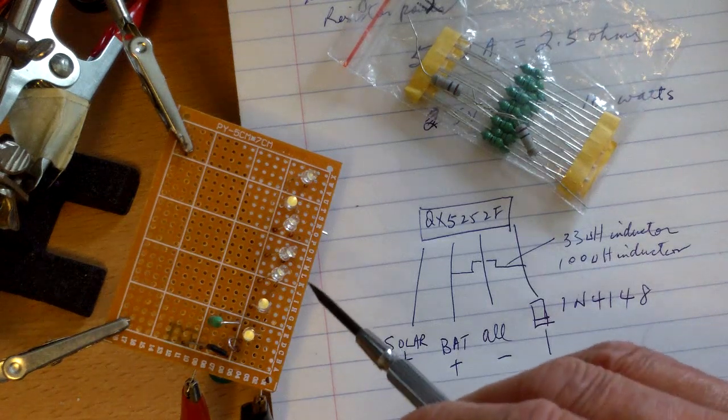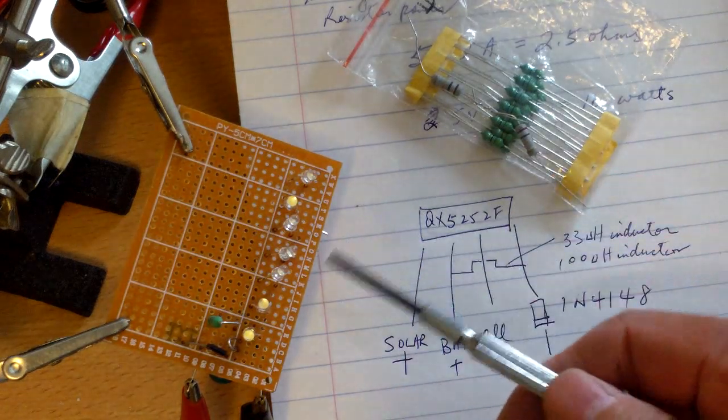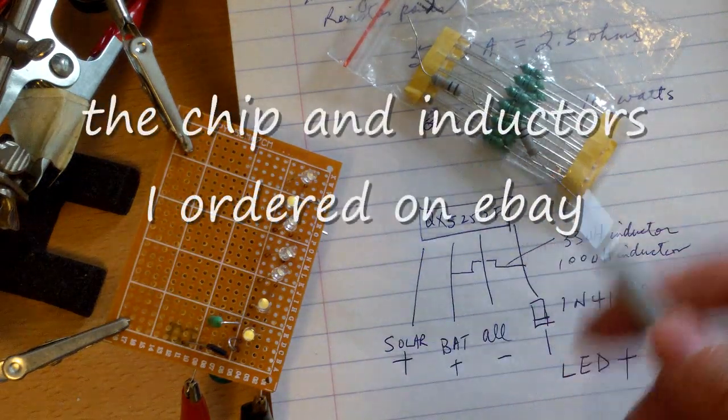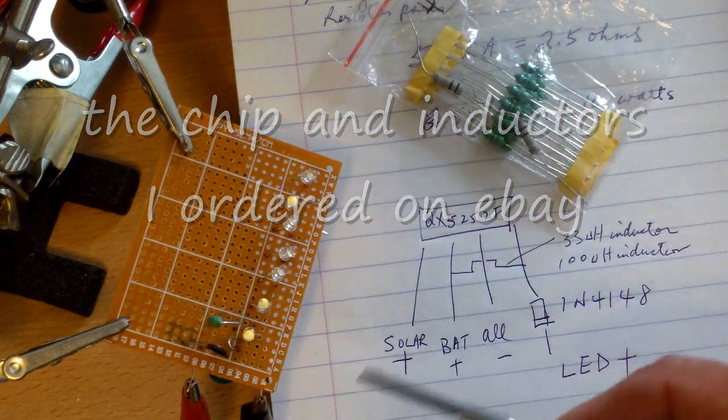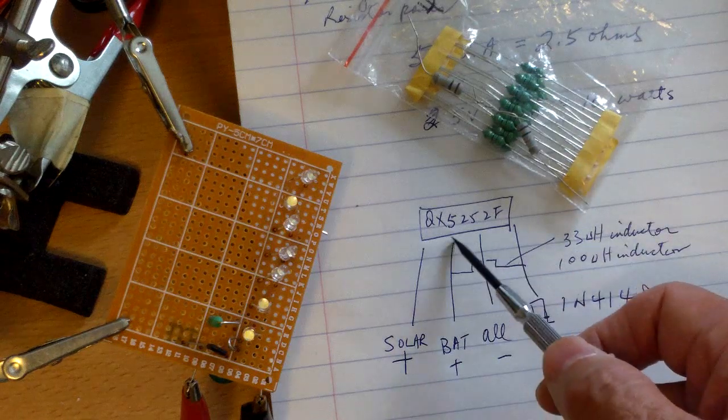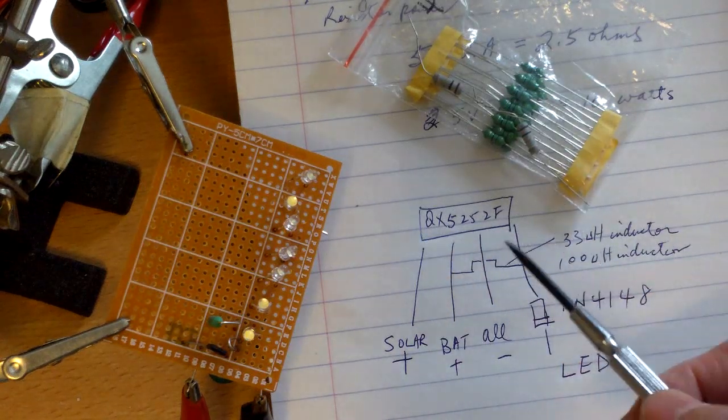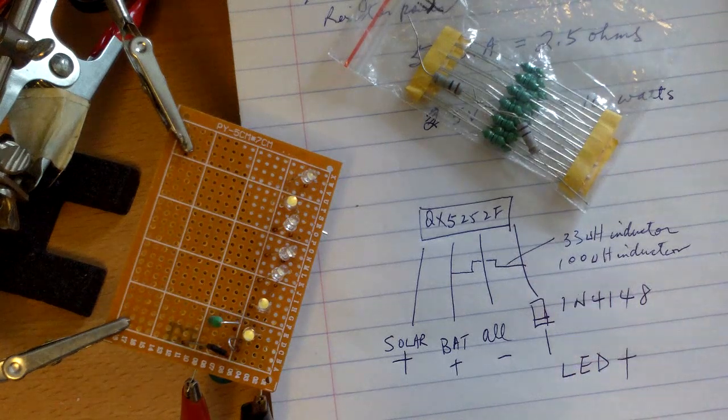I'm using 7 LEDs, they're just 3mm bright white LEDs, nothing special. And then the chip is this small job here which is the QX5252F which is used in many of these garden lights.